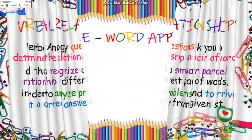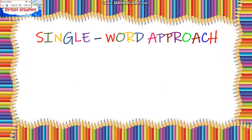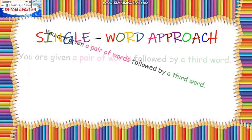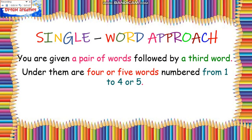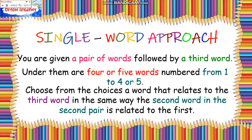We have two kinds of approaches in dealing with verbal analogies: the single word approach and the paired word approach. In the single word approach, you are given a pair of words followed by a third word. Under them are four or five words numbered one to four or five. You are to choose from the choices a word that relates to the third word in the same way the second word in the second pair is related to the first.